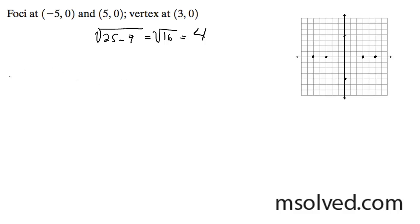So our equation is going to be x squared over 9 minus y squared over 16 is equal to 1.